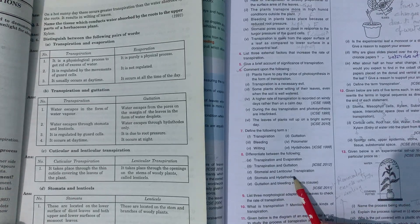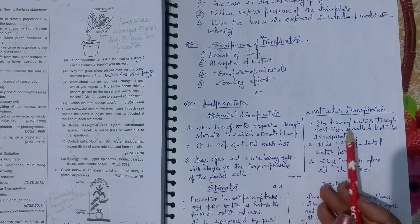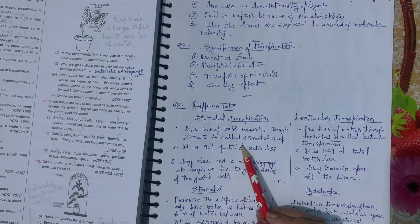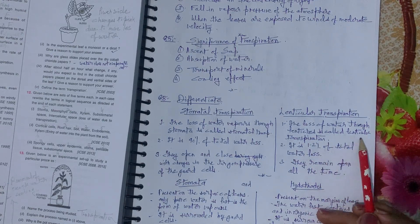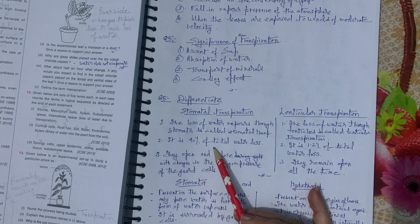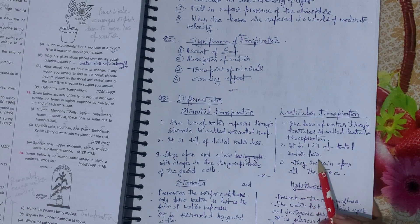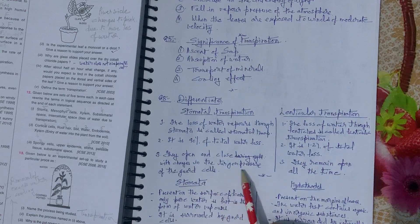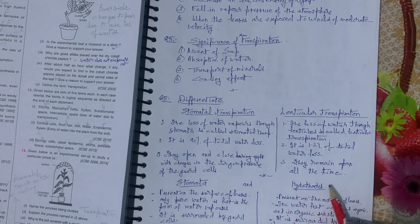Stomatal vs. lenticular transpiration: loss of water vapors through stomata is stomatal transpiration (90% of total water loss); loss of water through lenticles is lenticular transpiration (1 to 2% of total water loss). Stomata open and close with changes in turgor pressure of the guard cell, whereas lenticles remain open all the time.